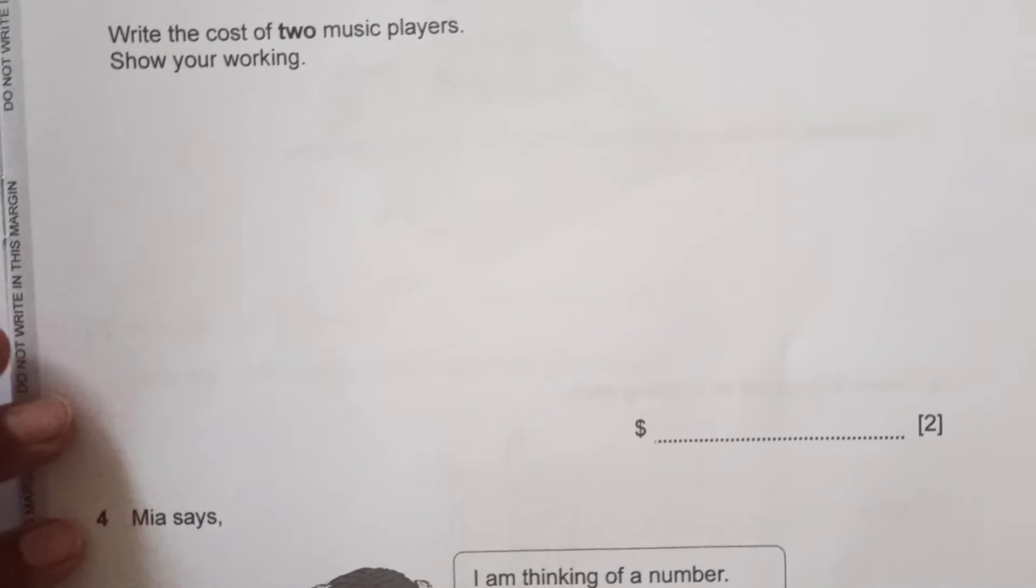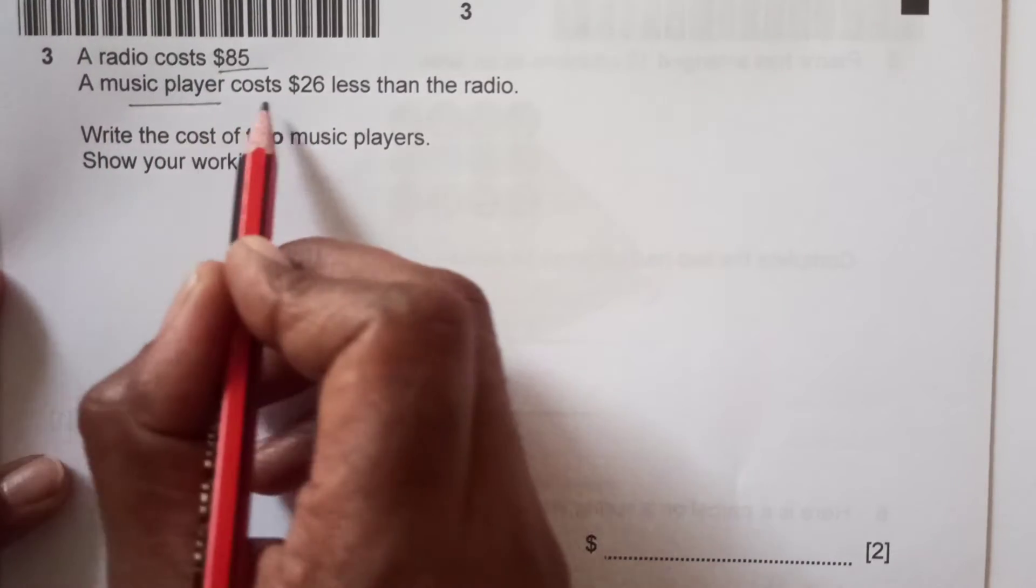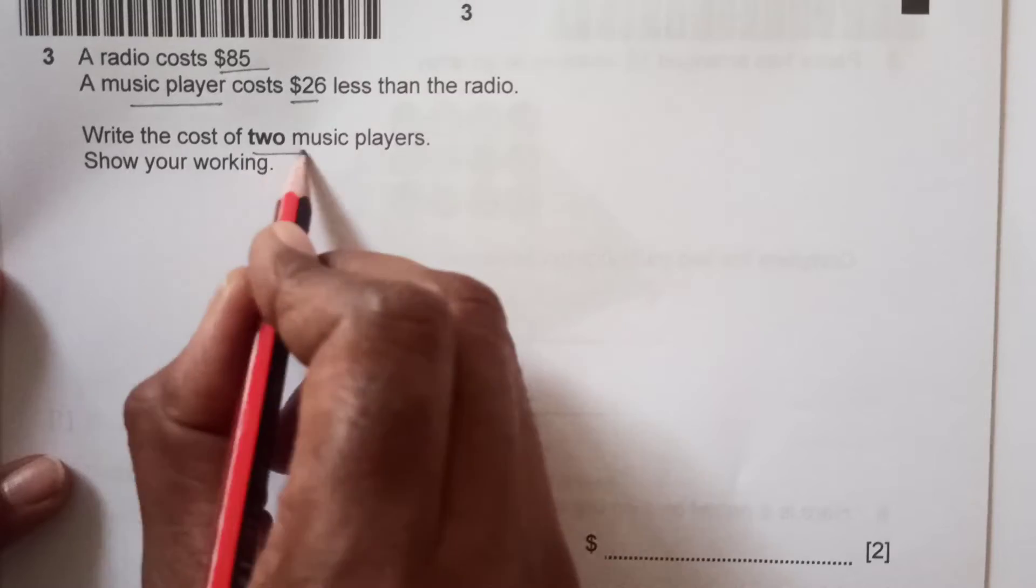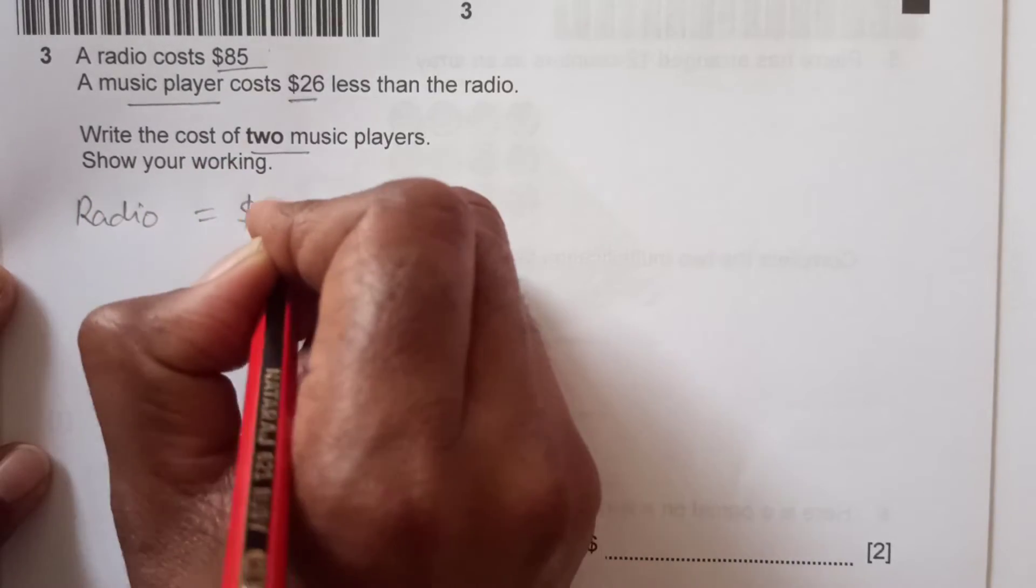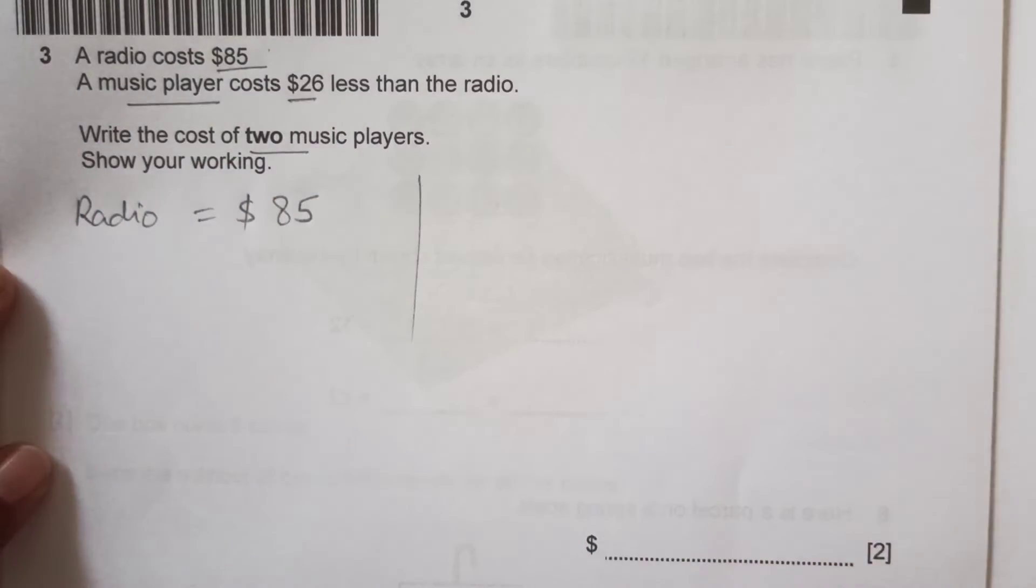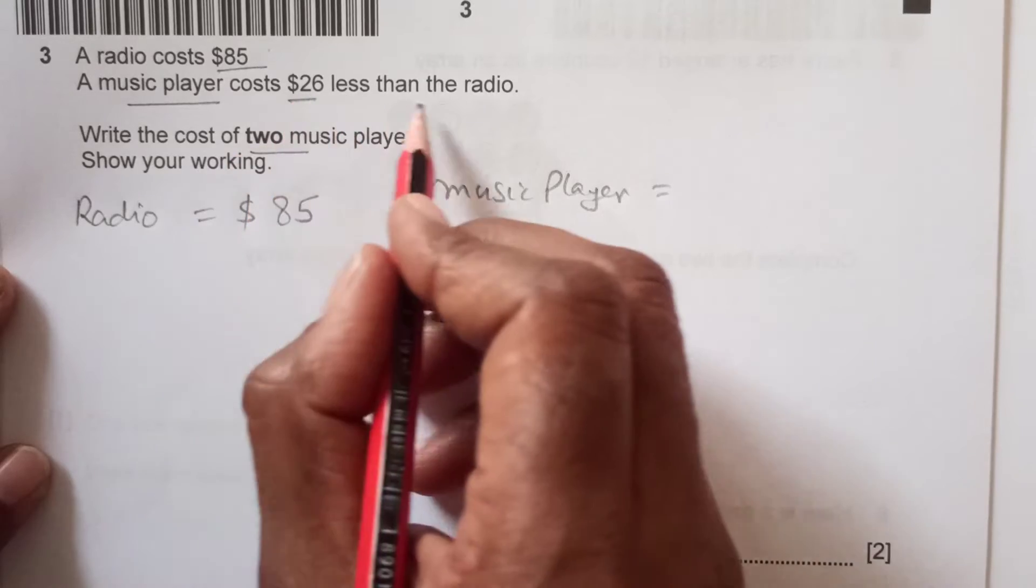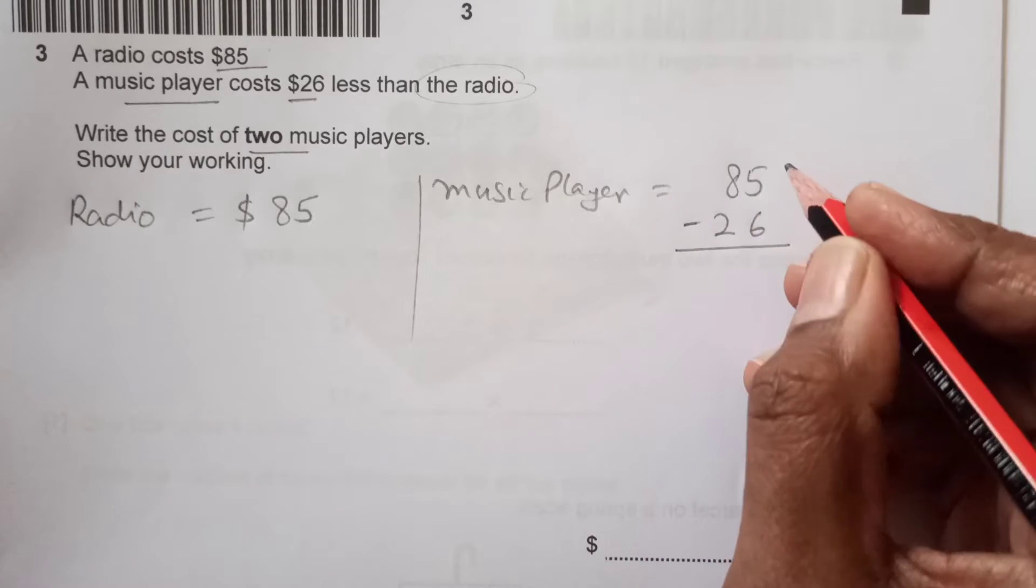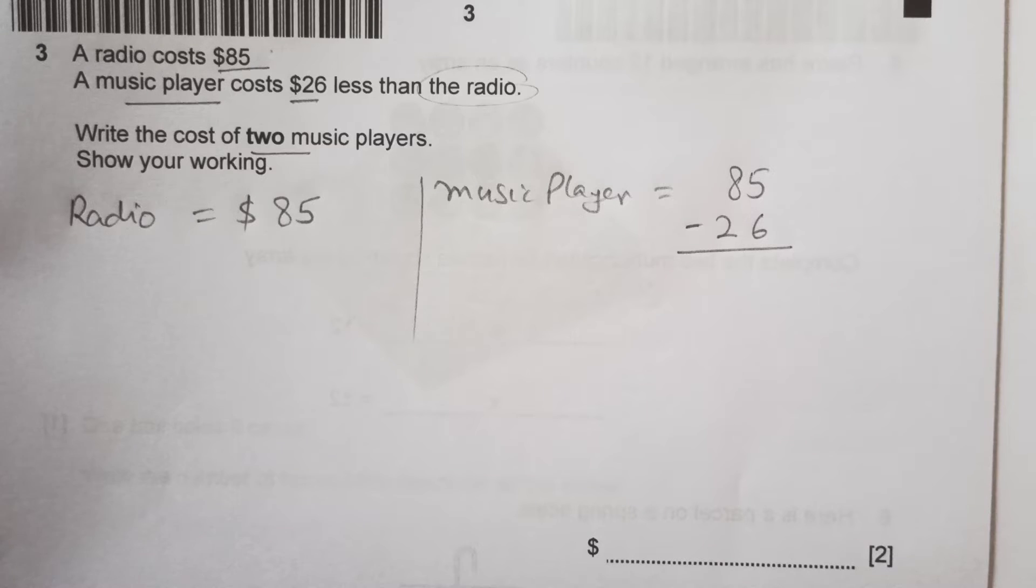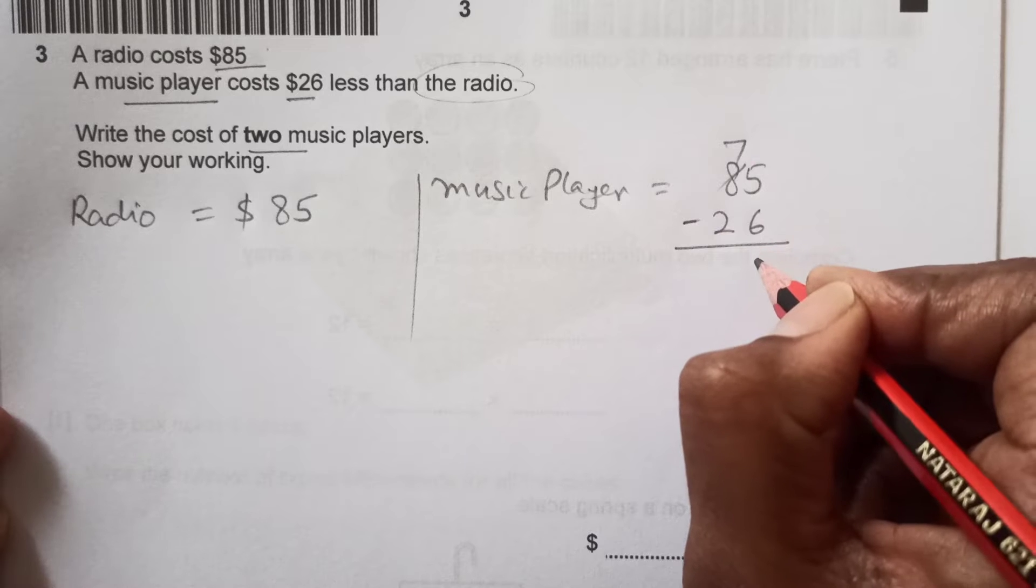Number 3: A radio costs $85. A music player costs $26 less than the radio. Write the cost of two music players. Cost of radio is $85. Music player cost is $26 less than the radio. So if you subtract, 85 minus 26, that will give you the cost of the music player. 15 minus 6 is 9, so $59.